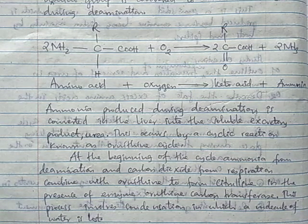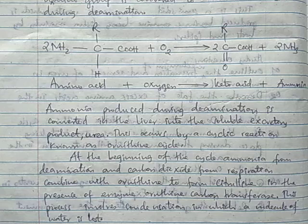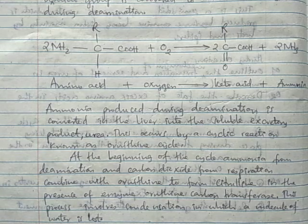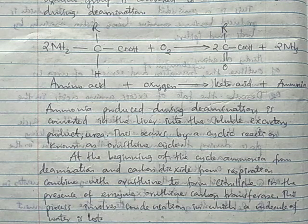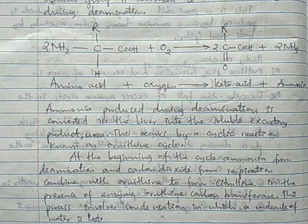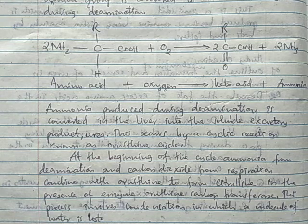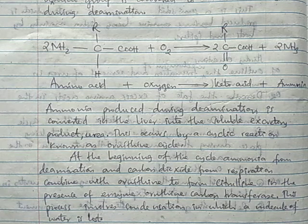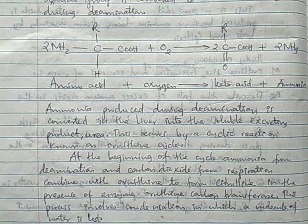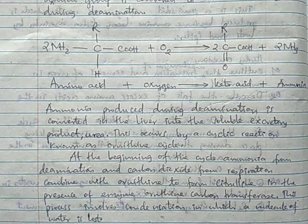If you are asked about the ornithine cycle, first you give an introduction that the ornithine cycle is a reaction in the liver which converts ammonia formed from deamination to a soluble product which is urea, or to a less toxic soluble product which is urea. One important thing we are doing with deamination is to make ammonia less toxic because urea is less toxic compared to ammonia.